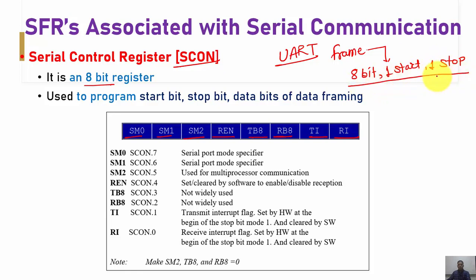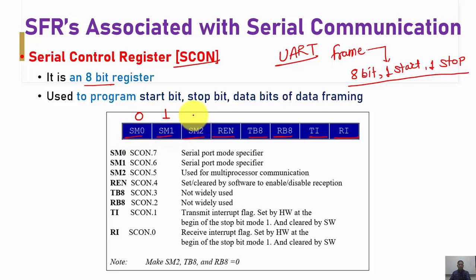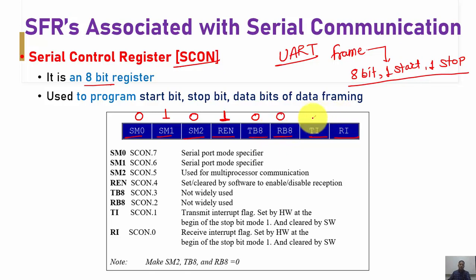To select Mode 1 for UART framing, the SCON register SM0 and SM1 bits are configured as 0 and 1 respectively. Since we are not dealing with multiprocessor mode, SM2 is kept as 0. To enable serial data reception, the REN bit is set to 1. Since we are not dealing with Mode 2 or Mode 3, TB8 and RB8 are set to 0. By default, TI and RI flags are set to 0.